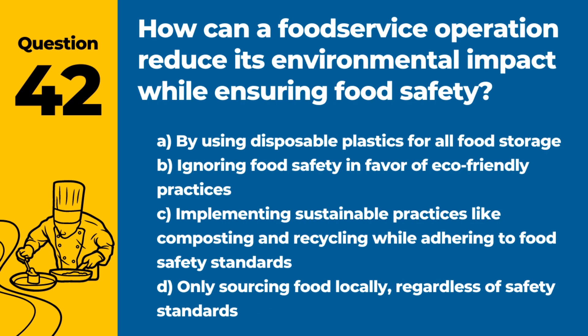Question 42. How can a food service operation reduce its environmental impact while ensuring food safety? Answer: C. Implementing sustainable practices like composting and recycling while adhering to food safety standards. Balancing environmental concerns with food safety is crucial for responsible operations.